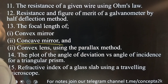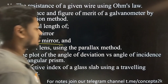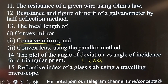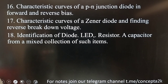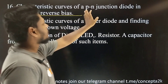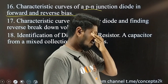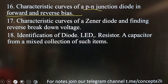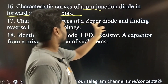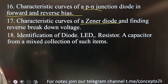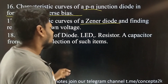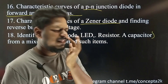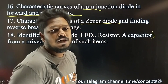I versus D graph. That is the experiment. This is the Zener diode — basically, you can observe the reverse voltage breakdown. That is the identification of diode, LED, resistor, and capacitor from a collection of such items. In that instrument, this is how you identify it — if you are doing this, this is LED or diode, this is a resistor. This is how you can learn KVL.